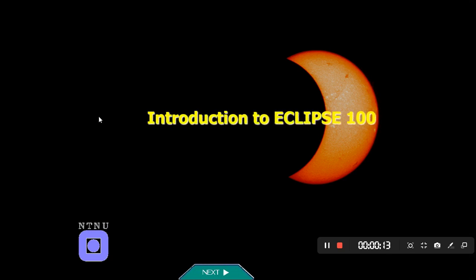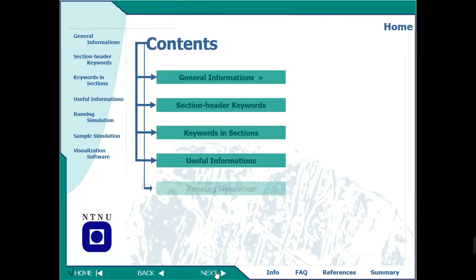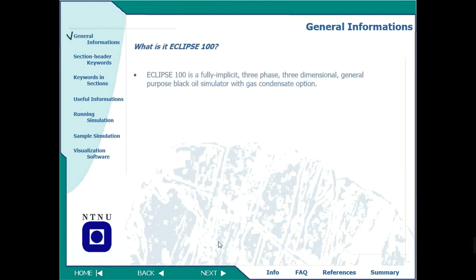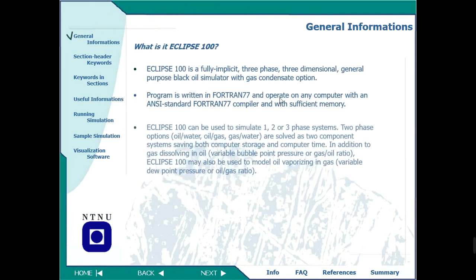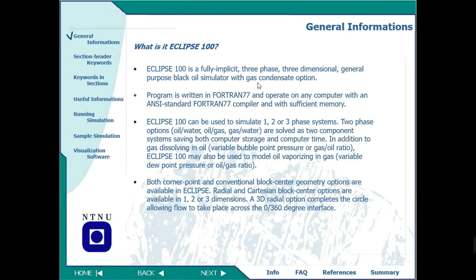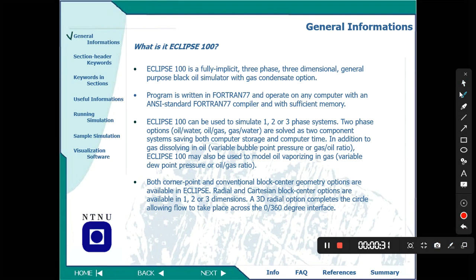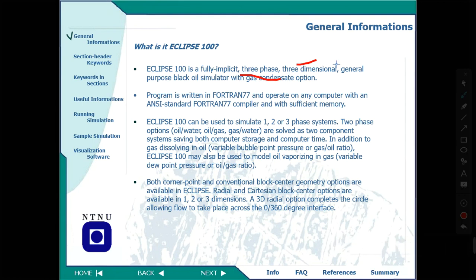First of all, we need to learn what Eclipse is. Eclipse is a Reservoir Simulation software used widely in Reservoir Engineering. It is a three-phase software — oil, gas, and water — and it works in three dimensions: X, Y, and Z. It is a general-purpose tool used for many applications including production predictions and many others.